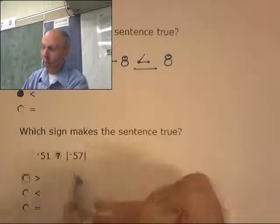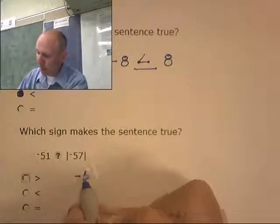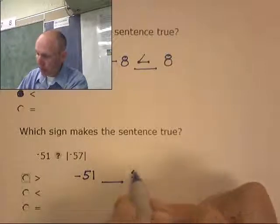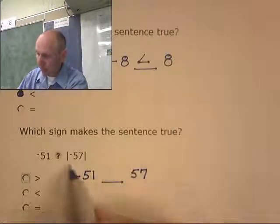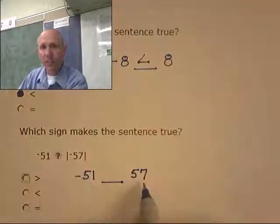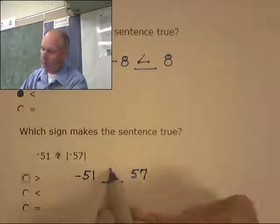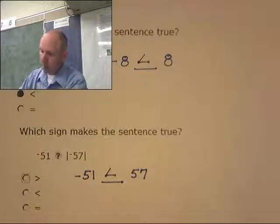Once again, let's use up the absolute value first. That's going to give me negative fifty-one something fifty-seven. The absolute value of negative fifty-seven is fifty-seven. Which inequality symbol goes here? The less than symbol.